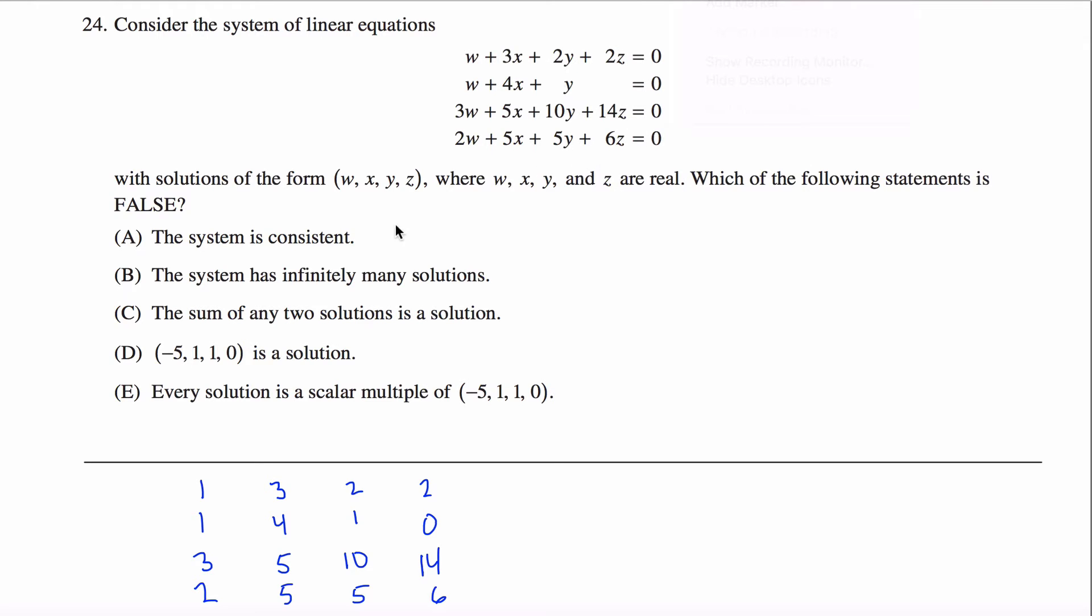All right, this is what's called a homogeneous system. And homogeneous systems always have a solution, at least one. It's kind of trivial solution where w equals x equals y equals z equals zero. Change them all to zero, you get a true statement. And the system is consistent. So this is not a false statement.